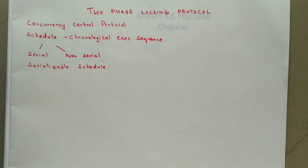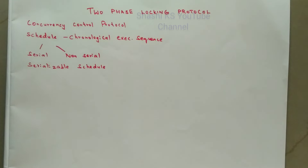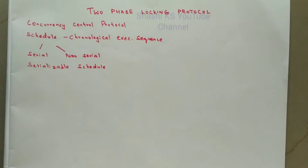Coming to the concept of concurrency control — as mentioned, two-phase locking protocol is a concurrency control protocol. Concurrency control is very important for proper functioning of a database management system because in a regular database, many transactions may be executed simultaneously and they may require access to the same data. Whenever multiple transactions are running concurrently, there is a possibility that the database may be left in an inconsistent state. Concurrency control protocols guarantee serializability in such a situation.